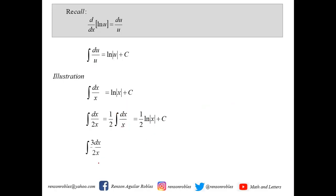Another modification: we have the integral of 3dx over 2x. The constant three-halves is being multiplied to dx over x, so we can factor it outside. We have three-halves times the integral of dx over x, and we know that integral of dx over x is ln(x), giving us three-halves ln(x) plus c.